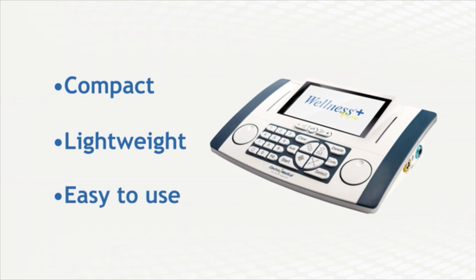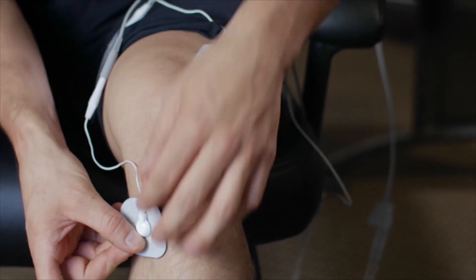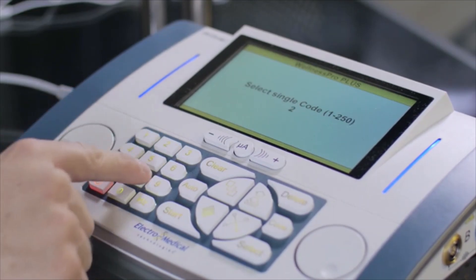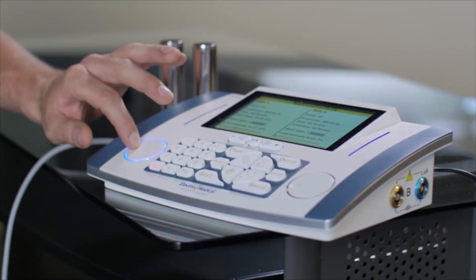The unit is compact, lightweight, and the easiest-to-use electrotherapy device on the market. You can start using Wellness Pro Plus just minutes after you remove it from the box. The built-in iGUIDE system walks you through all the steps of usage and programming.